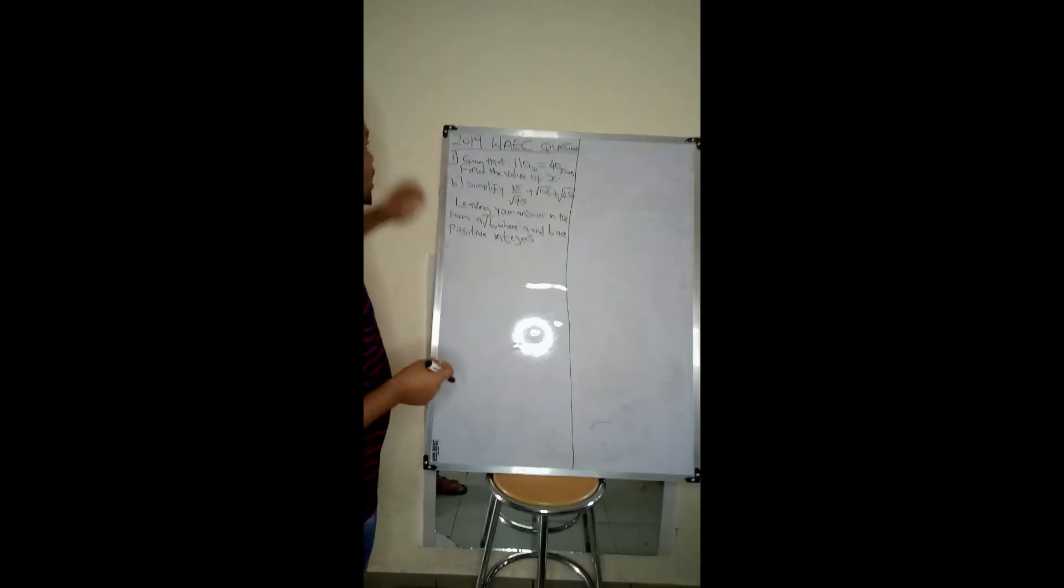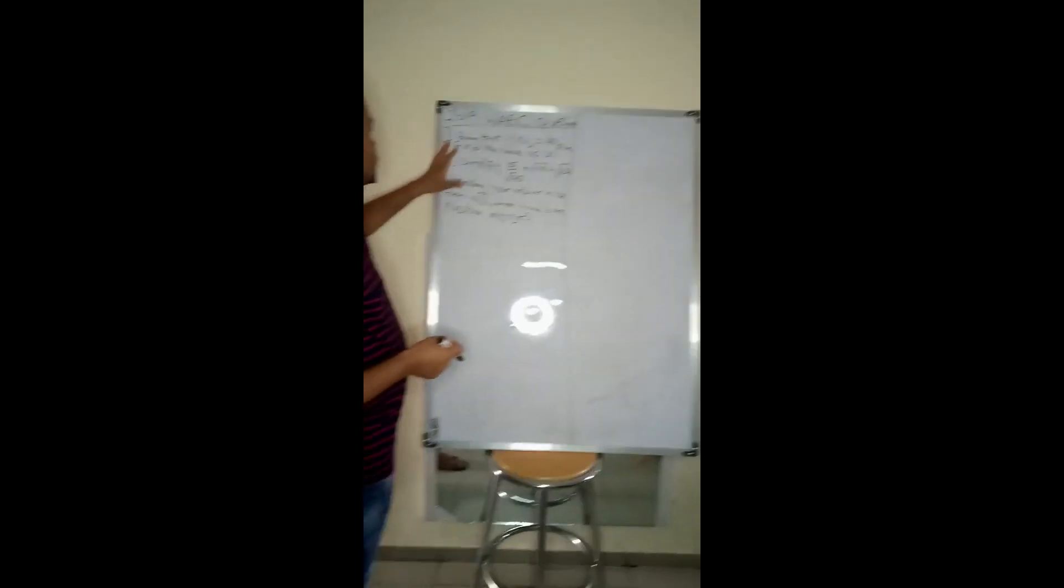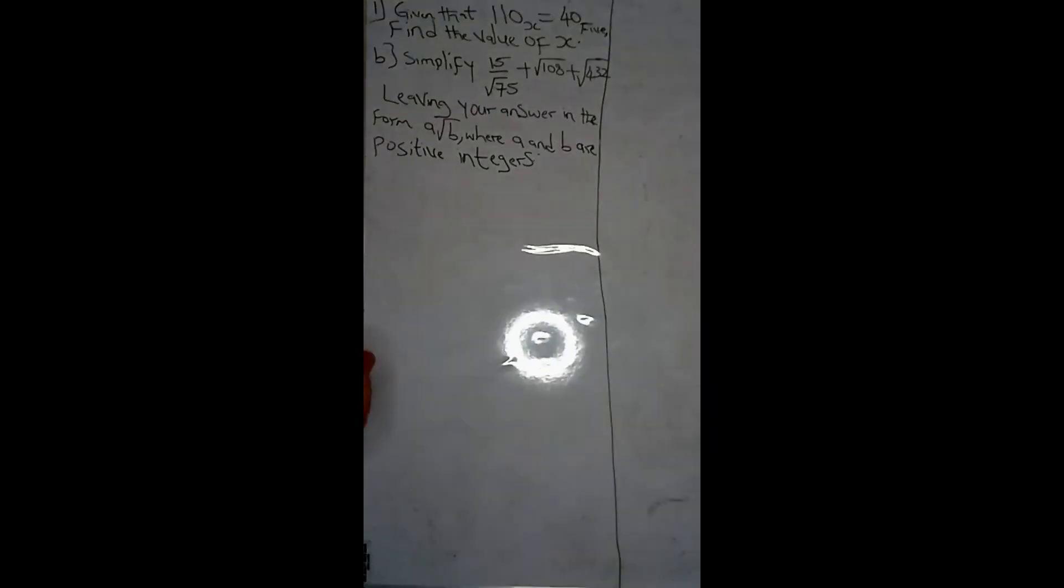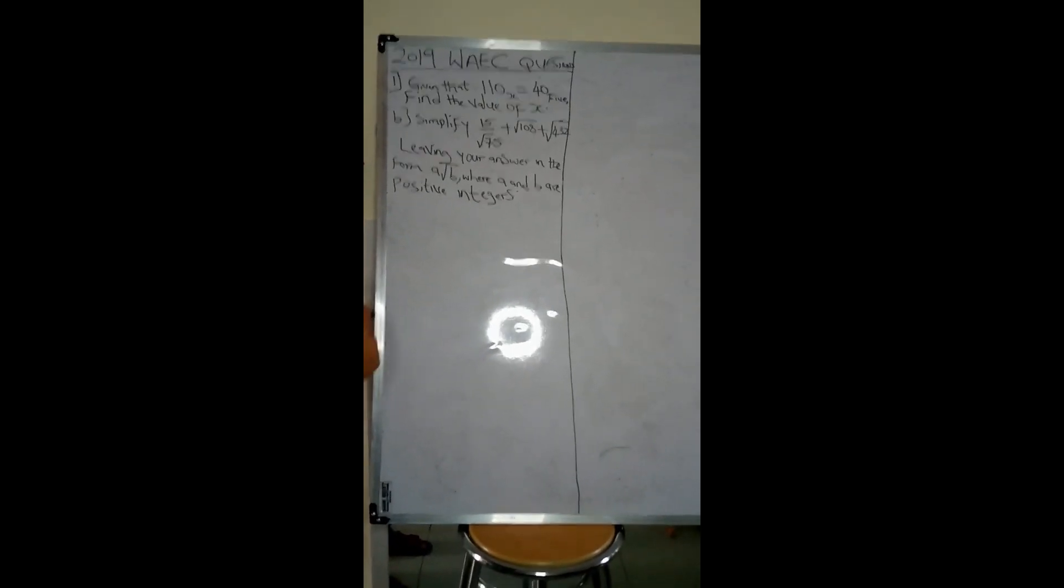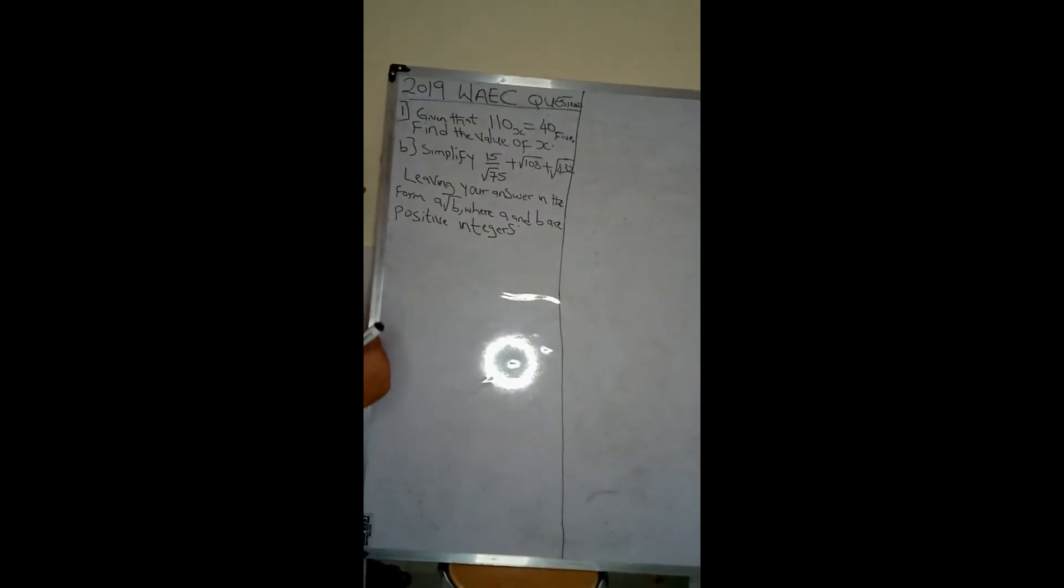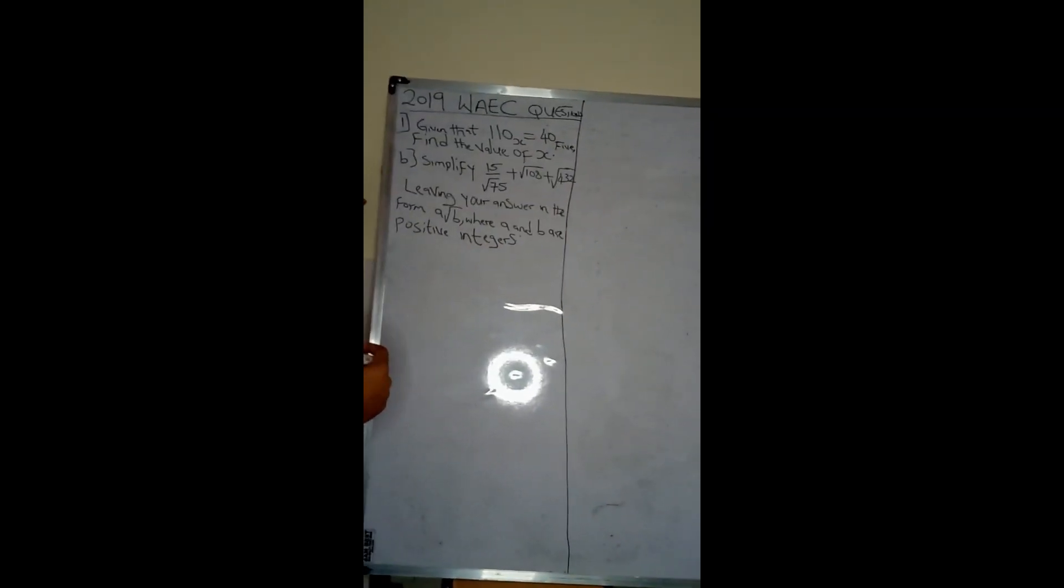For question 1 in the 2019 WAEC questions, it says: given that 110 base x equals 40 base 5, find the value of x. Part B says simplify 15 over root 75 plus root 108 plus root 432.